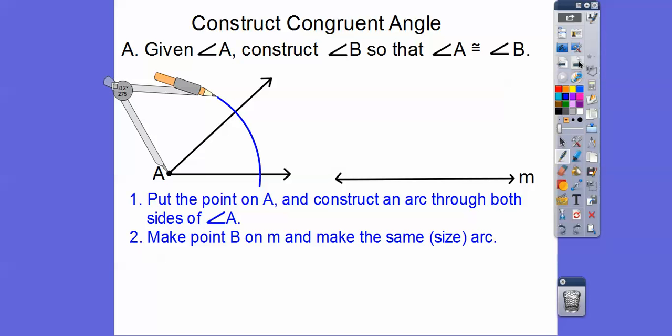So the next thing is we're going to make a point on this line right here. So let's go ahead and make a point B right there and we're going to make the same size arc.